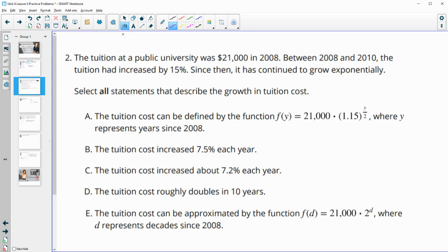Number two, the tuition at a public institution was $21,000 in 2008. Then between 2008 and 2010, which is two years, the tuition had increased by 15%. Since then it has continued to grow exponentially. Select all statements that describe the growth in the tuition cost.